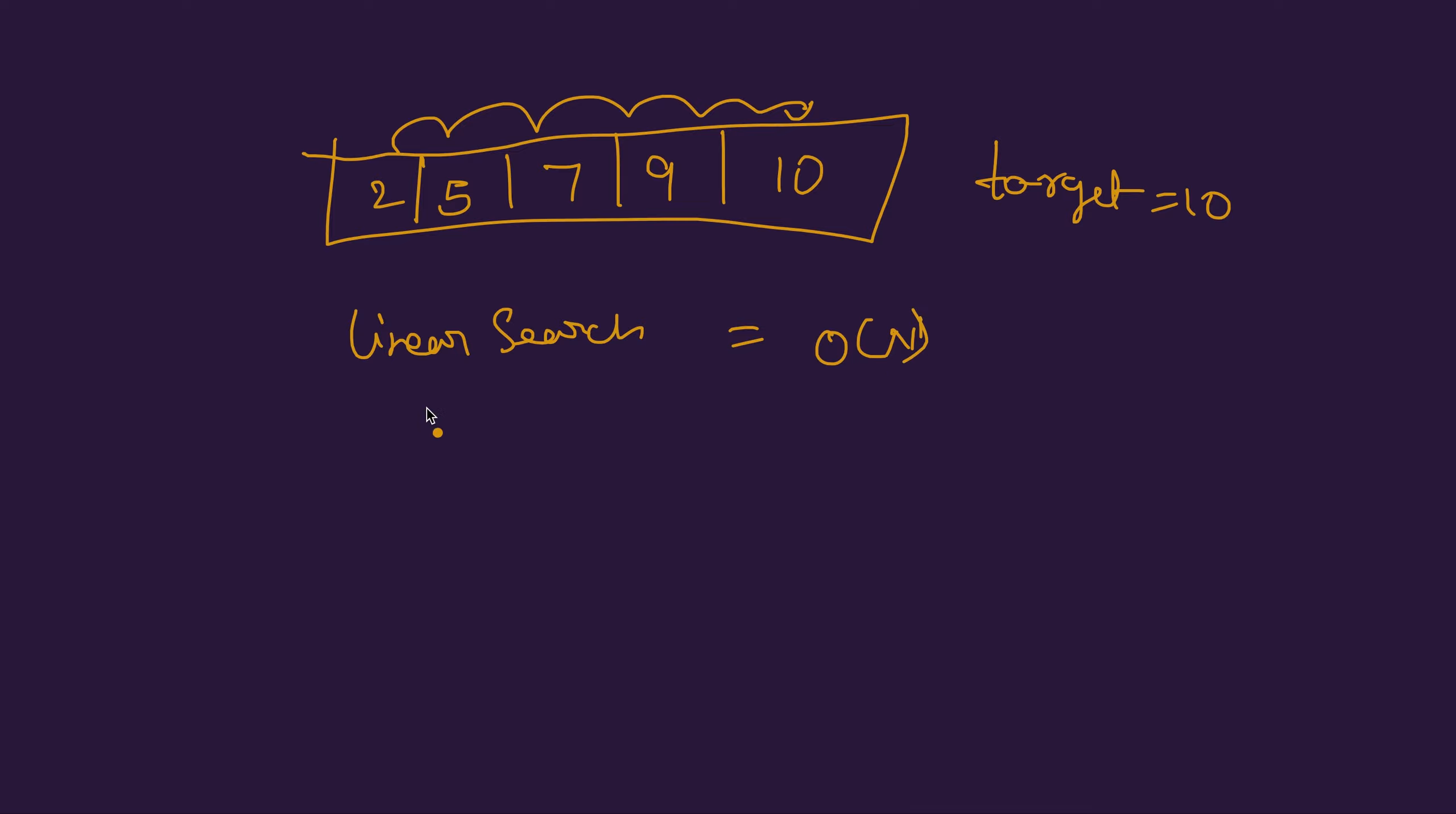Now how a binary search works is we divide the given array into equal halves by finding out the mid index. We find the mid using the left index, the starting index, and right index which is the last index, divided by 2.